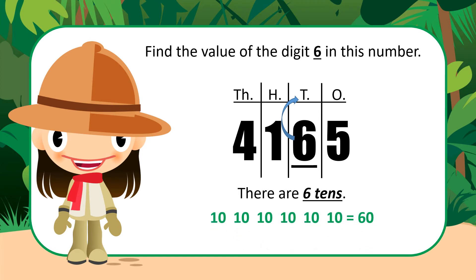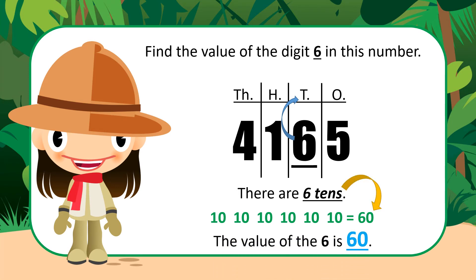But instead of doing all of that adding, we just simply count by 10. And if you know how to count by 10, you know that 6 tens equals 60. Therefore, the value of the 6 in this number is 60.